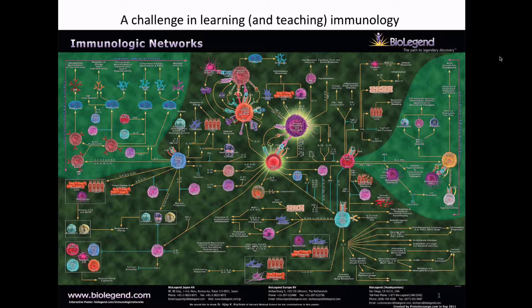We have a general challenge when thinking about the immune system because we have so many interconnected parts working together. Taking this set of interconnected parts and flattening it into a syllabus can be a little bit of a challenge. The way immunologists tend to deal with this problem is by grouping different types of immune responses together into similar groups, so one of the things you're going to see today is different ways that we divide up the immune system.